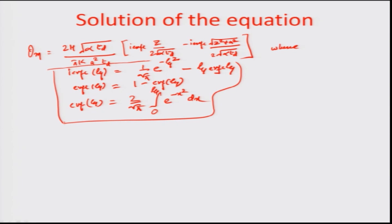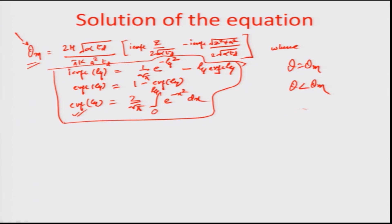That is how we represent the different kinds of representations associated with this numerical integral — the error function. The solution is clear in the sense that we try to find the temperature boundary where theta equals theta_m, beyond which theta is less than theta_m. Looking at the crater, we are interested in the boundary where theta equals theta_m; beyond that lies a zone where theta is less than theta_m, which is still the solid portion. The crater contains liquid metal because the temperature is at or above the melting temperature.